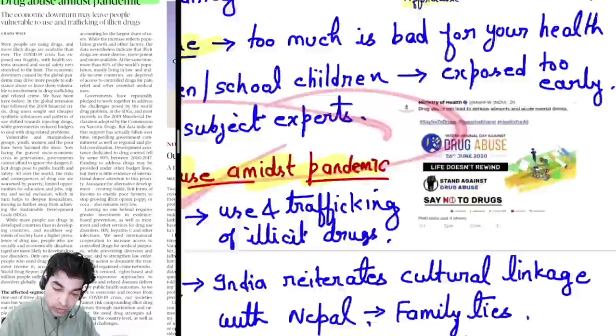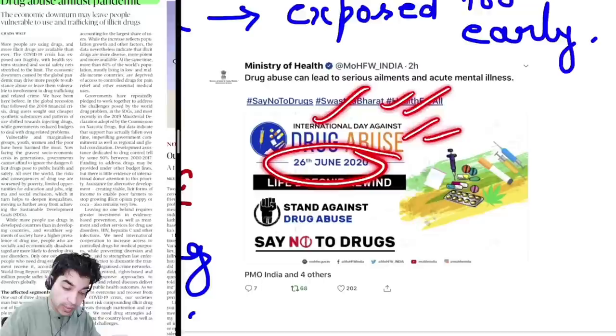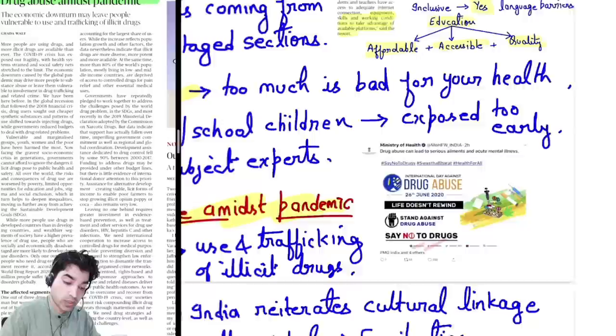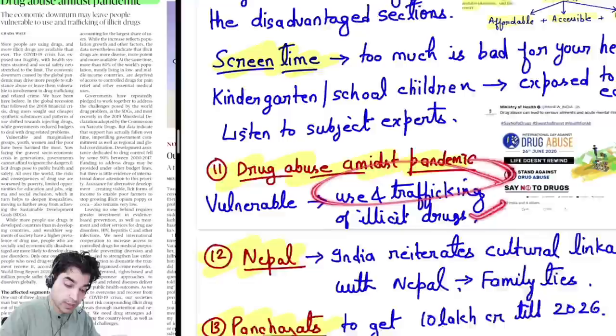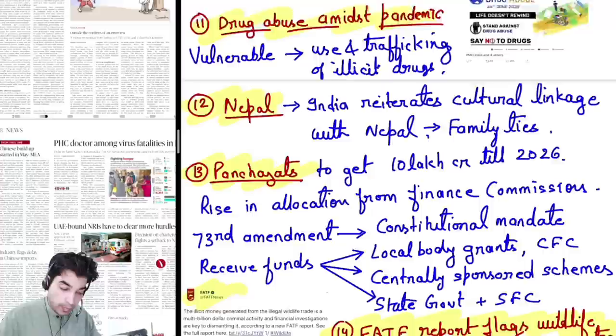Eleventh news: drug abuse amidst pandemic. Alongside the pandemic, drug abuse is also a concern. The Ministry of Health has shared a good infographic on Twitter — June 26th is International Day Against Drug Abuse. Stand against drug abuse, say no to drugs — this is our collective responsibility. People are becoming vulnerable, and trafficking and illicit drugs are a significant issue.